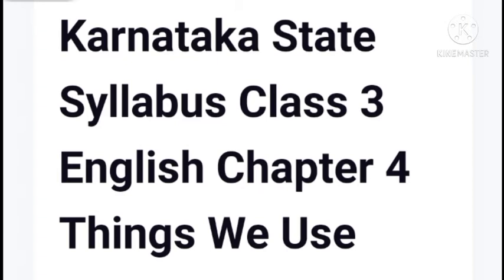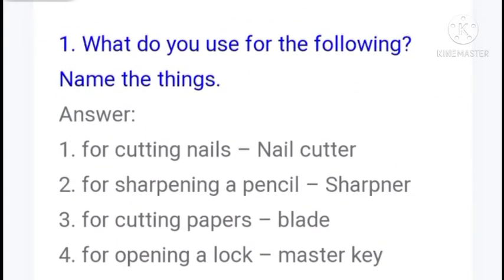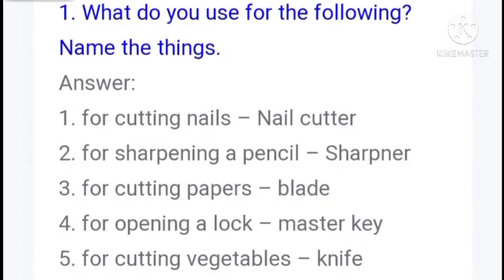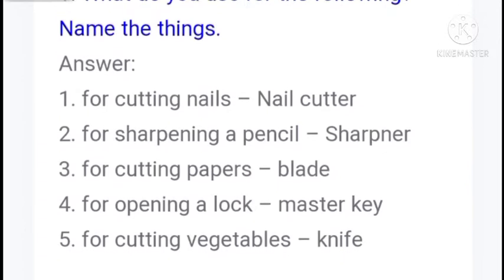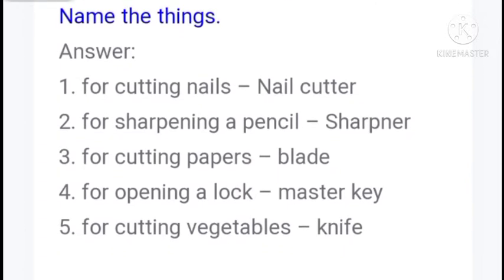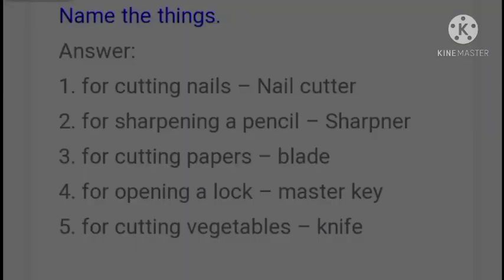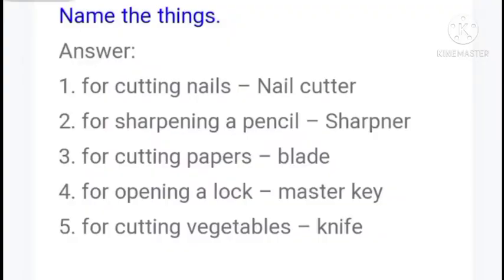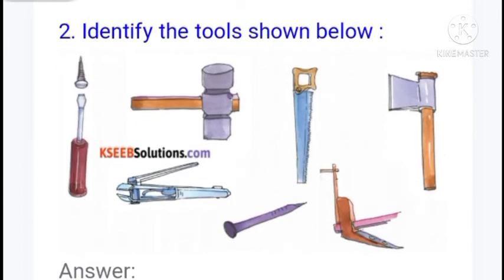First question: What do you use for the following? Name the things. For cutting nails: nail cutter. For sharpening a pencil: sharpener. For cutting papers: blade. For opening a lock: master key. For cutting vegetables: knife.